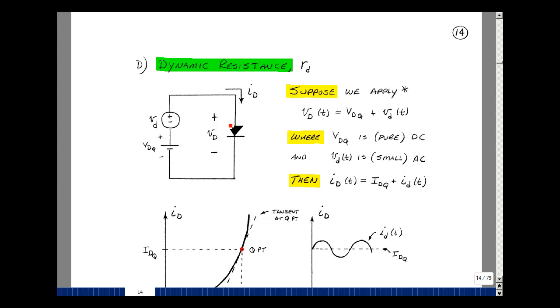Suppose that we take a real diode and put a voltage across it that is made up of an AC component and a DC component. In other words, this is a pure sine wave, and this is just a DC battery. The voltage across the diode would just be the sum of these two voltages.